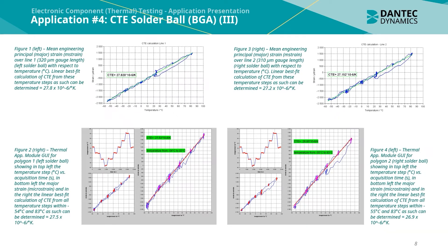Figures 2 and 3 show the thermal application module GUI for polygon 1, which was for the left solder ball, showing in the top left the temperature step in degrees Celsius versus acquisition time. The bottom left shows major strain in microstrain and the right shows the linear best fit calculation of CTE from all temperature steps within minus 45 and 83 degrees Celsius, determined to be 27.5 × 10⁻⁶ per degree Kelvin. Figure 3 shows the similar GUI module for the right solder ball, with good agreement between the two CTE measurements.